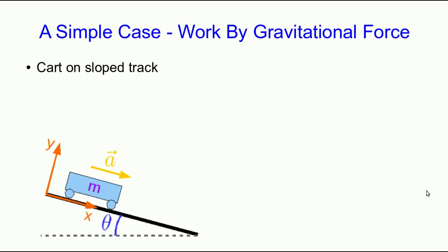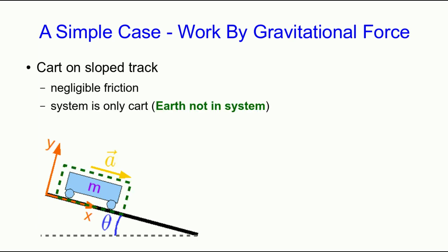To think about this, we're going to use one of the simplest cases: a cart on a sloped track. The forces are all constant, acting in constant directions relative to the motion, and it's a nice simple situation that could be set up in the lab. We're dealing with negligible friction, and our system is only the cart — I want to emphasize that the earth is not in the system. So any effect of the gravitational force on the cart will be treated as external work, not as a change in gravitational potential energy.